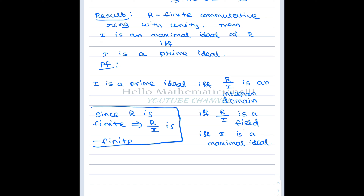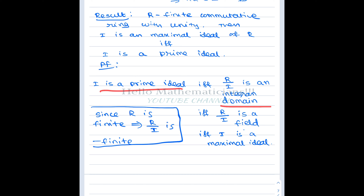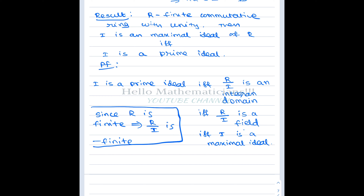The claim is: I is a maximal ideal of R if and only if I is a prime ideal of R. One direction is obvious — if I is maximal, it is prime. For the other direction, I is a prime ideal if and only if R/I is an integral domain. This is a very common result in ring theory — you can check in Herstein's Topics in Algebra or Gallian's Contemporary Abstract Algebra.